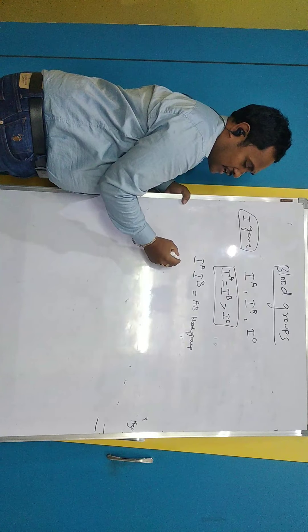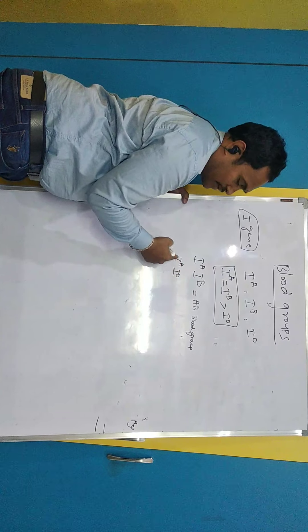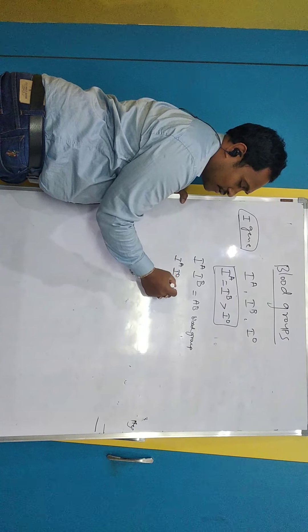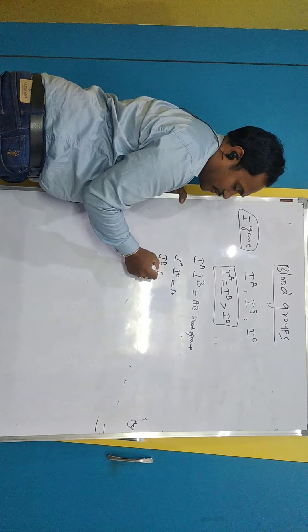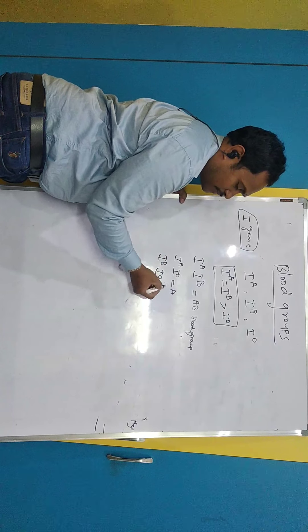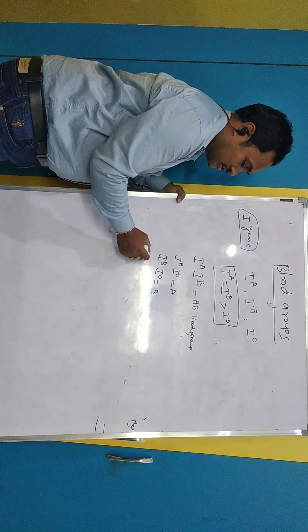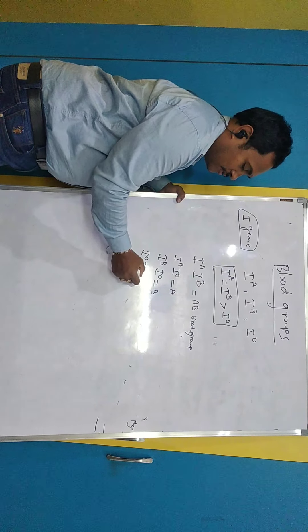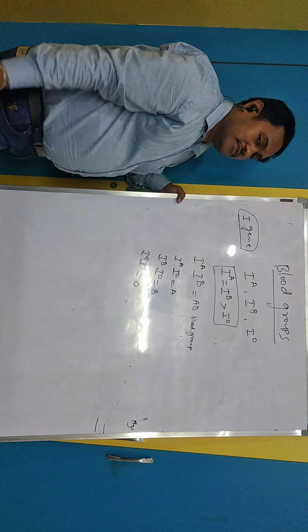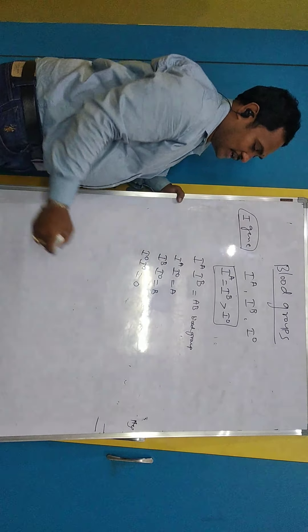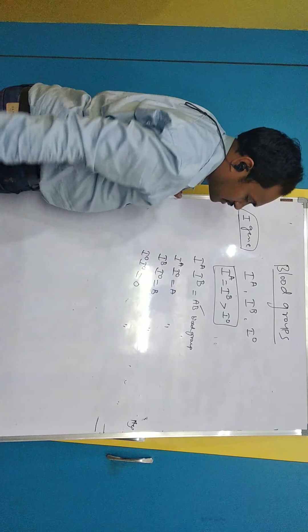Whenever you find a combination of IA and IO, since A is dominant, you get blood group A. If you get a combination of IB and IO, since B is dominant, you get blood group B. To get blood group O, the only option is IO IO — then only will you get blood group O. So these are the different phenotypes: AB, A, B, and O blood groups.